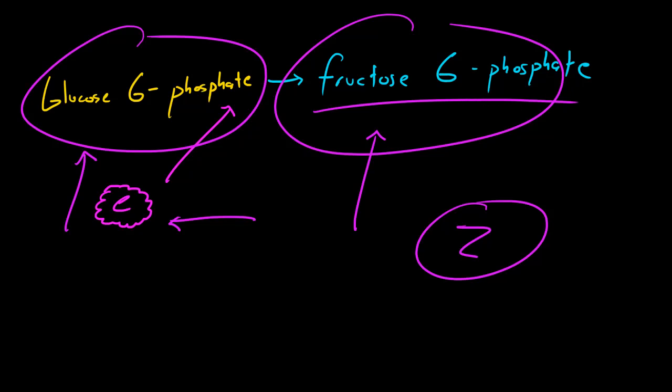Let's write that on a new slide. What we have now is fructose 6-phosphate. Where do we go from here? Now what we need is another enzyme. This enzyme is called phosphofructokinase.